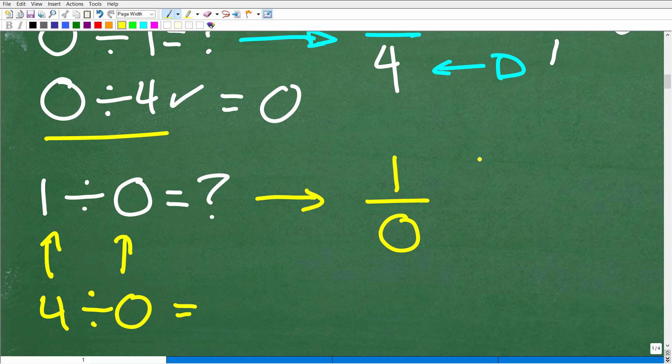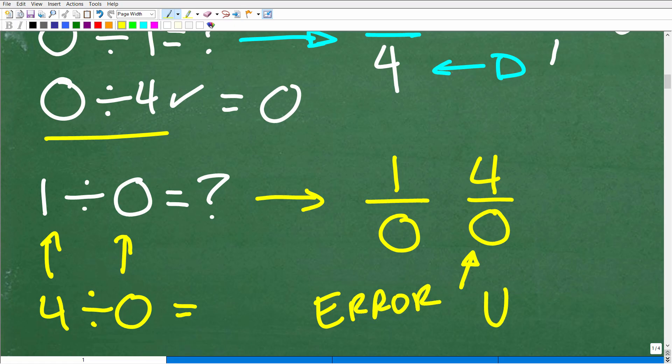So let's take a look at this question, four divided by zero. So zero, again, is in the denominator. So I'll just tell you right off the bat, when you cannot divide by zero in mathematics, it's always going to be an error. And typically, we like to express that as undefined. It's undefined.